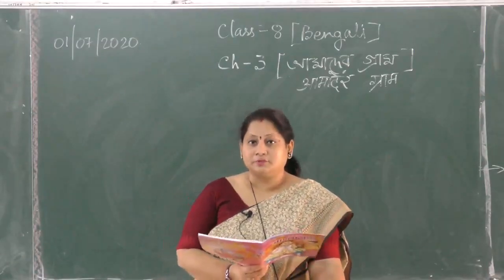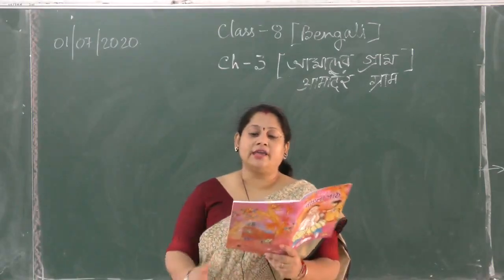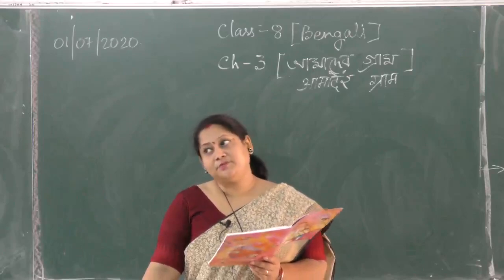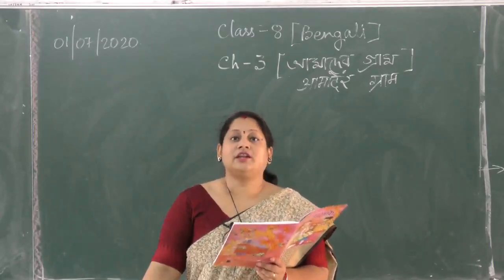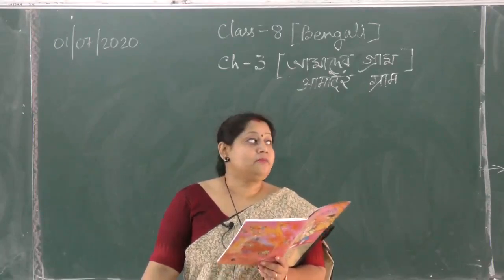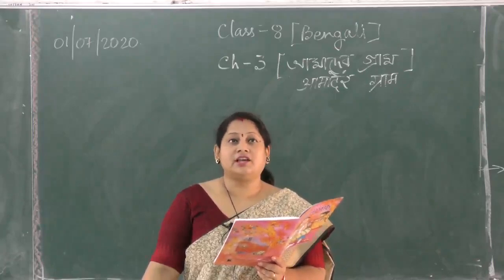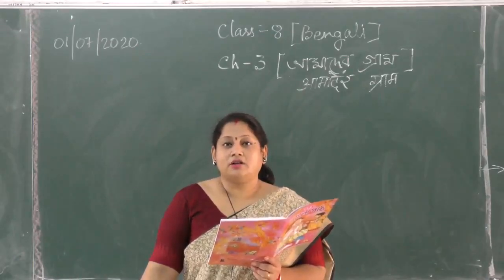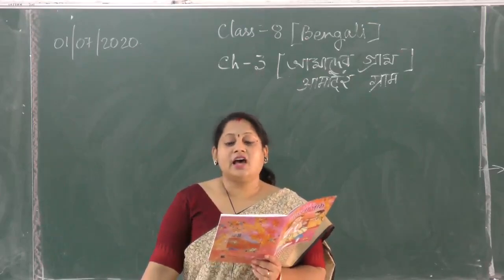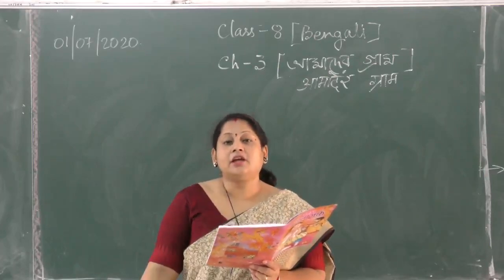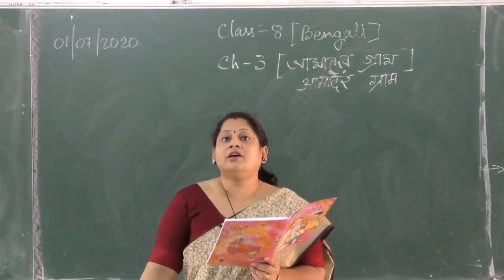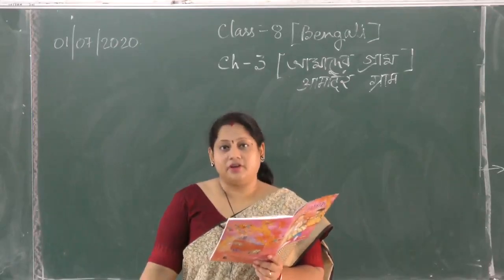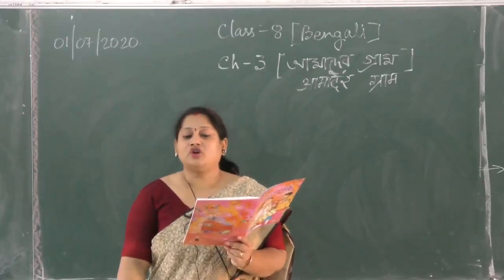Those who have not got the book, just listen properly. 'Amadir chhoto gaay, chhoto chhoto ghar' — that means Bangladesh ka jo village hai, us mein bahut chhota chhota ghar hai. Chhota chhota ghar means cottage — not a big flat or building. It's a cottage or hut type. Everyone lives together there — shauve mile — all together, harmoniously.